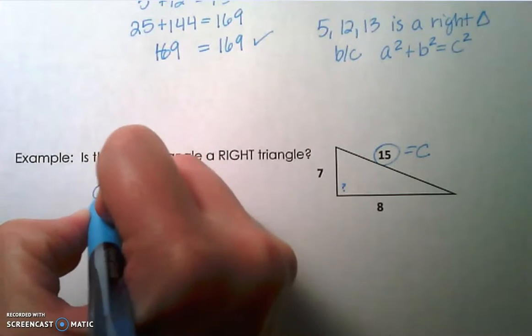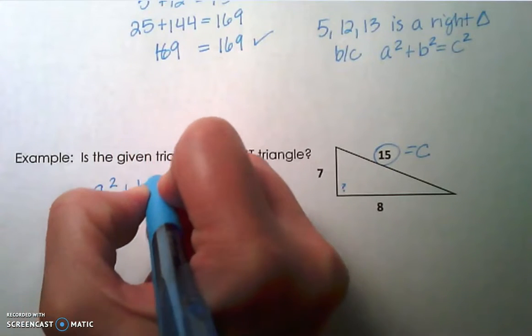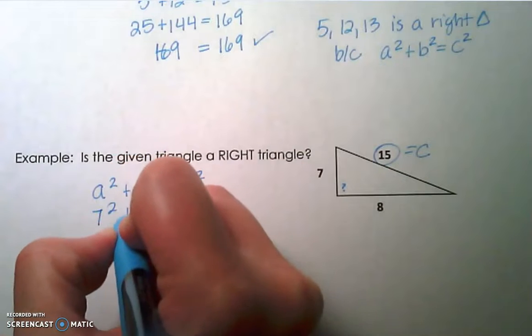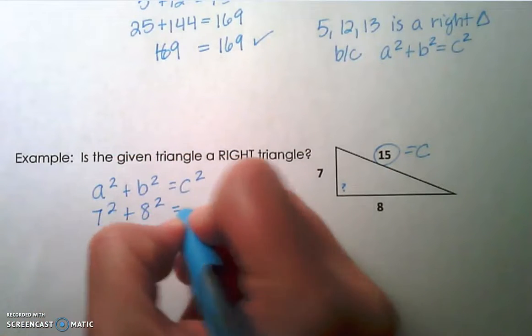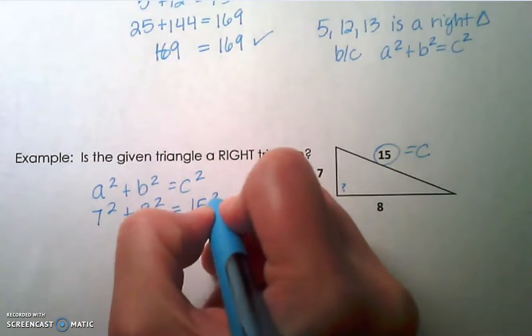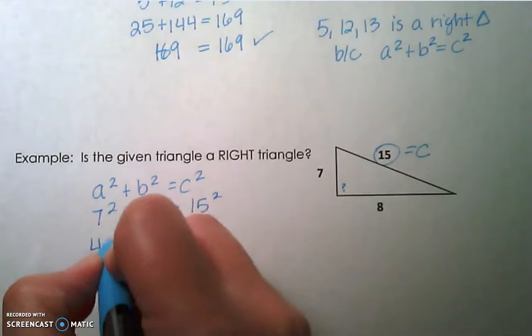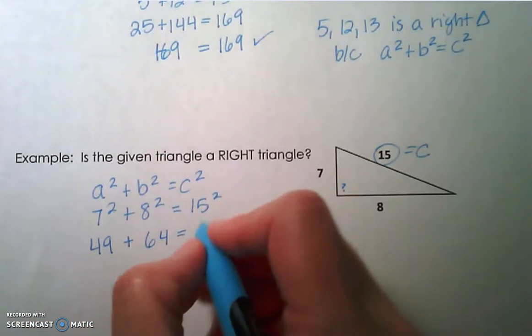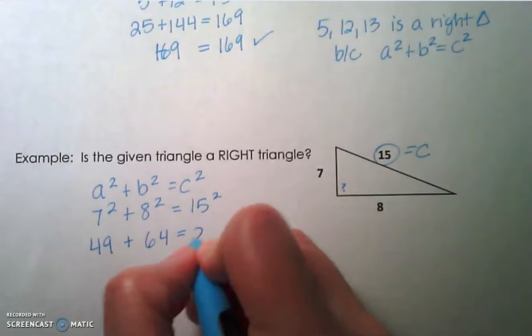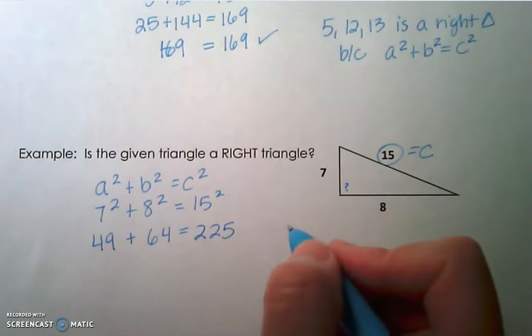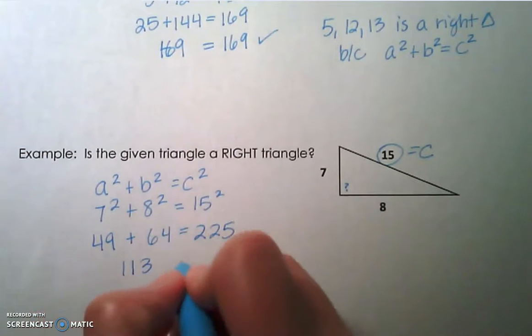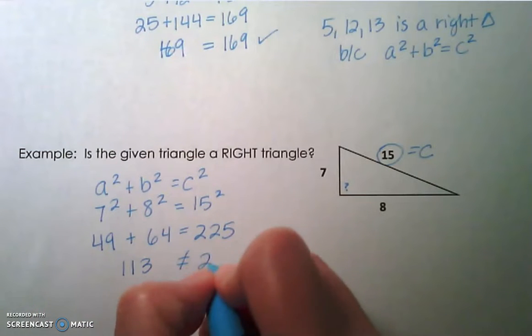We would do a squared plus b squared equals c squared. 7 squared plus 8 squared equals 15 squared. 7 squared is 49 and 8 squared is 64. We're trying to see if that's equal to 15 squared, which is 225. 49 plus 64 is 113 and that does not equal 225.